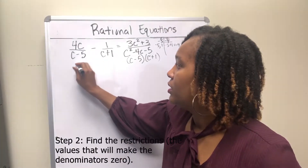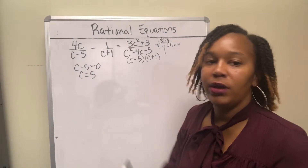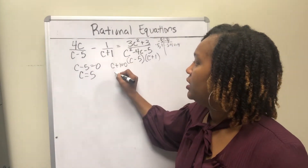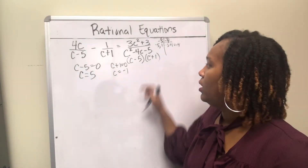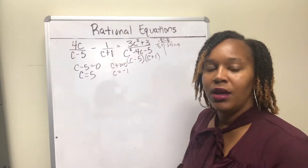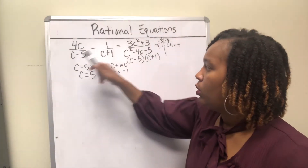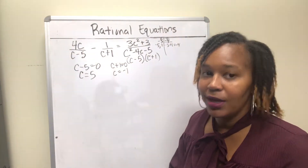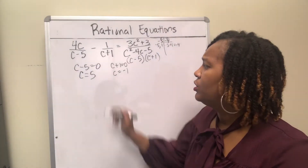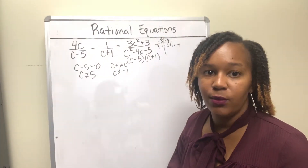Next, find any restrictions. Your denominators cannot be zero. For c minus 5, if c is 5 that makes the denominator zero. For c plus 1, if c is negative 1 that makes the denominator zero. The factored form of the third denominator gives the same results. You'll notice a pattern — the trinomial factored into the same expressions as the other two denominators. So your restrictions are: c cannot be 5 and c cannot be negative 1. Keep those in mind as you solve.